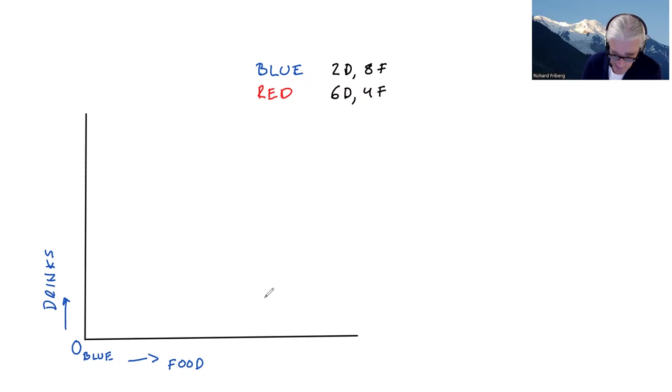So Blue has eight units of food and two units of drinks. Okay, so this may or may not be to scale but you get the point. So we have 2D, 8F here. Okay, so that's one person we're going to be looking at if they are willing to trade and if they're better off or worse off as a result of that trade.